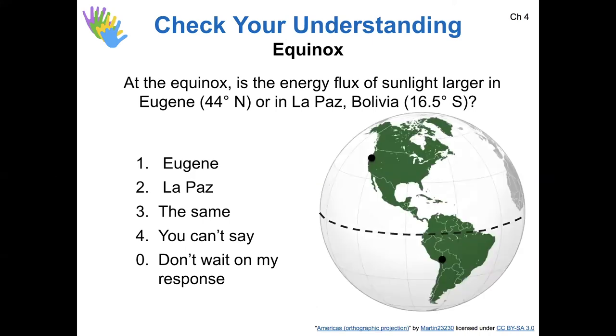So considering this, at equinox, do you think the energy flux would be larger in Eugene at 44 north or La Paz, Bolivia at 16 and a half south?